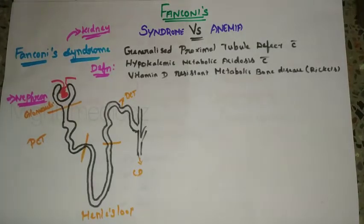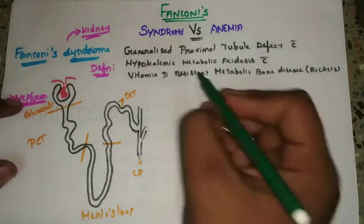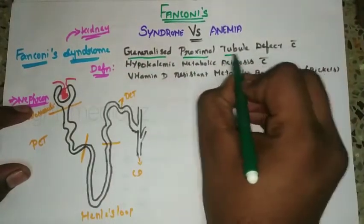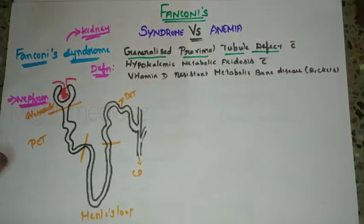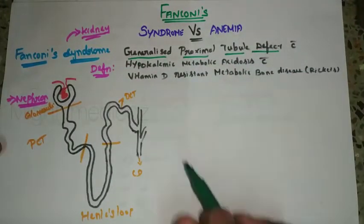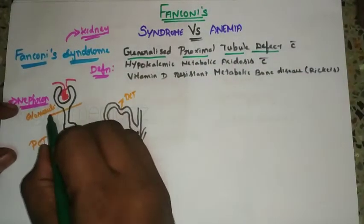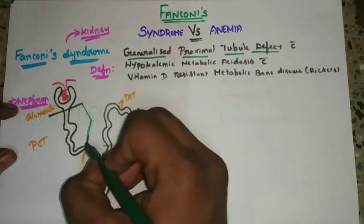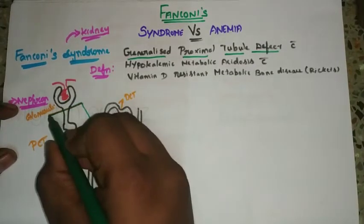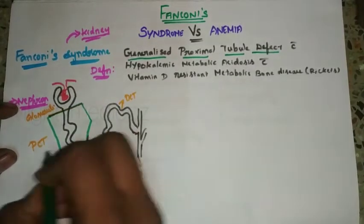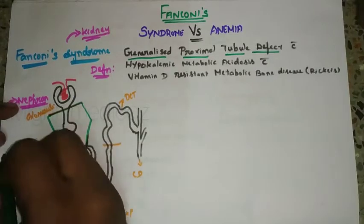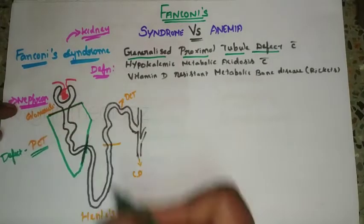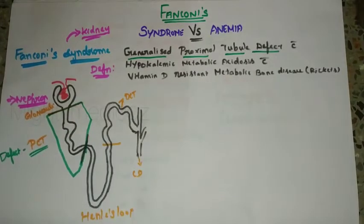In Fanconi's Syndrome, the key feature is a generalized proximal tubule defect. There is a defect in the proximal convoluted tubule of the nephron. That is the primary abnormality in Fanconi's Syndrome.